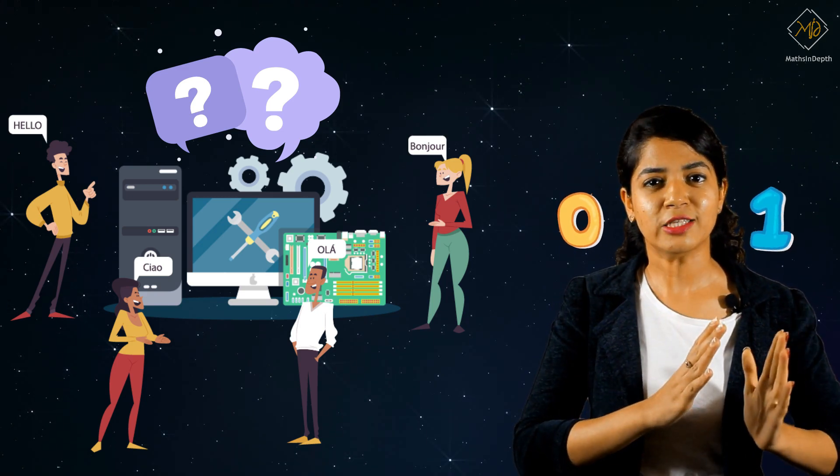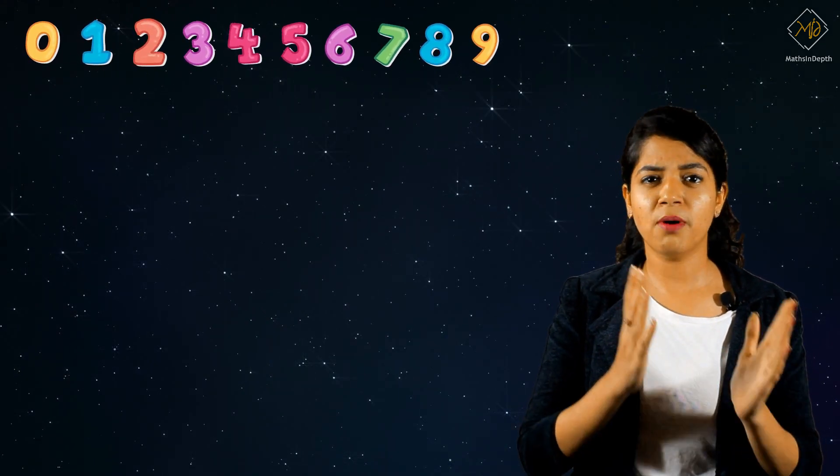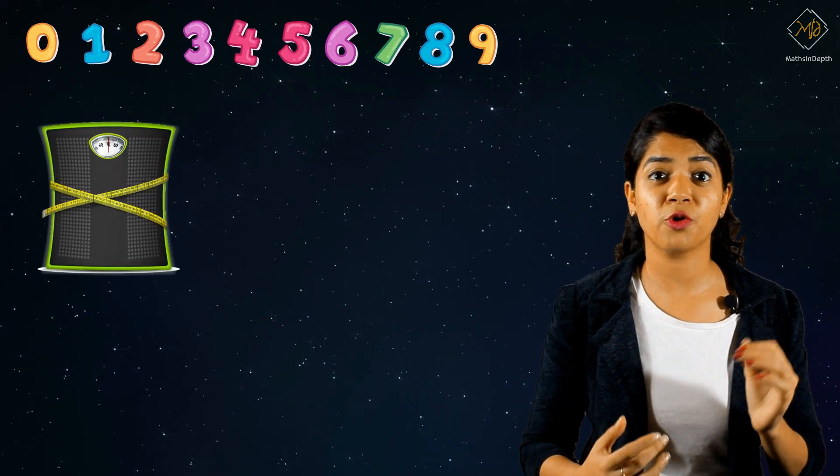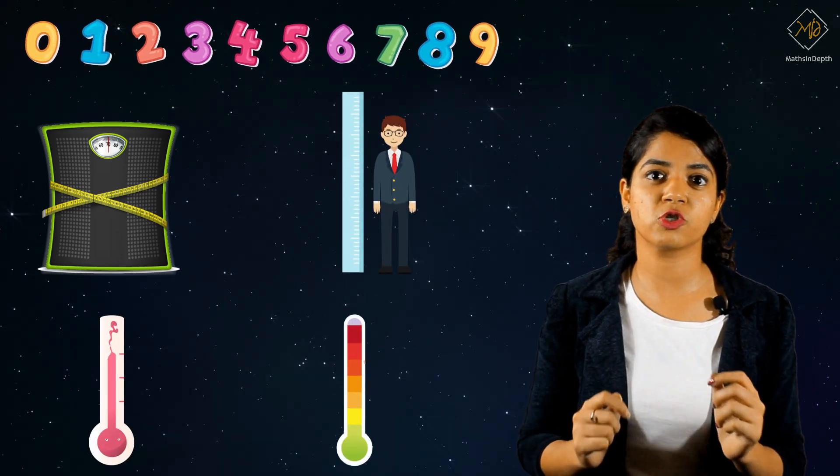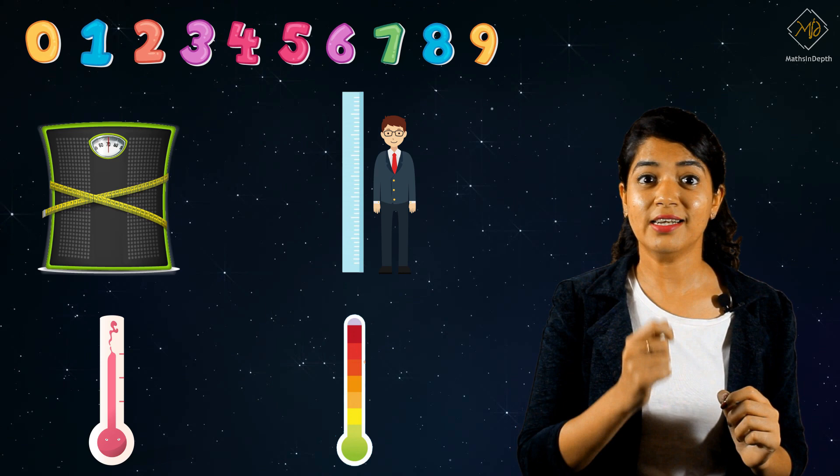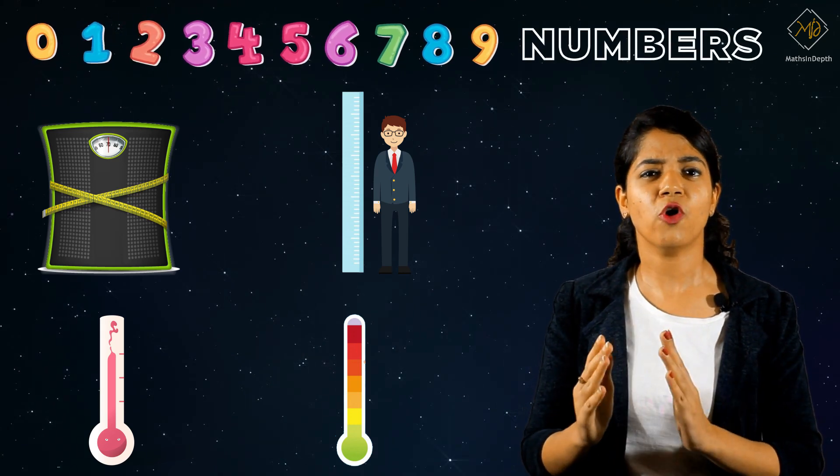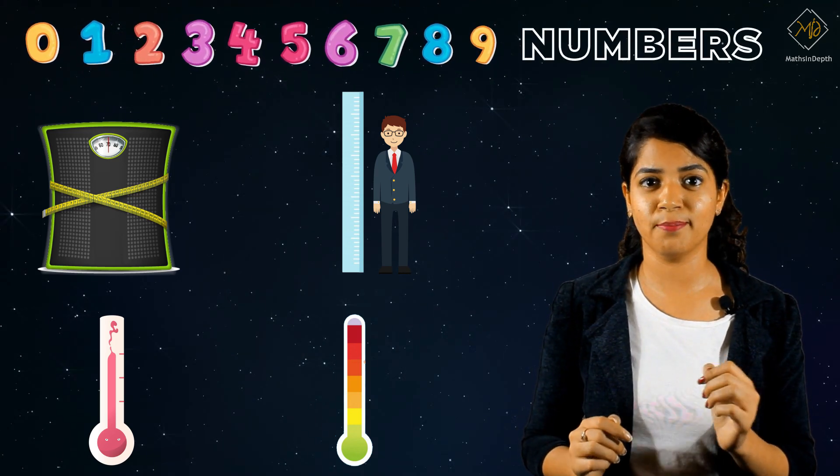Before answering this question, let's first understand the association of numbers in our life. When we measure something like weight, height, temperature, or humidity, we measure in terms of numbers. That is, any physical quantity is measured in terms of numbers.